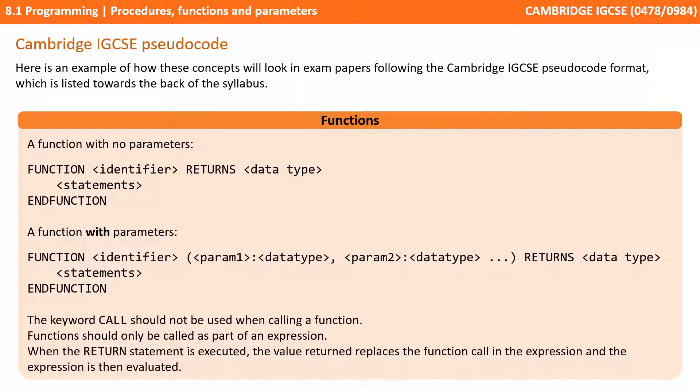In a very similar way functions can be called either with no parameters or with parameters. The structure is very similar. The only difference is because functions have to return a value we add a return word in the function header along with the data type for the value that needs to be returned.